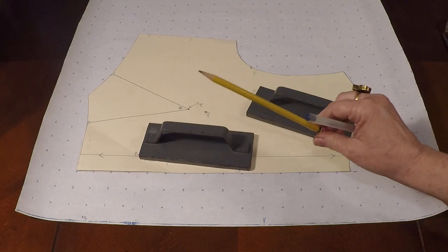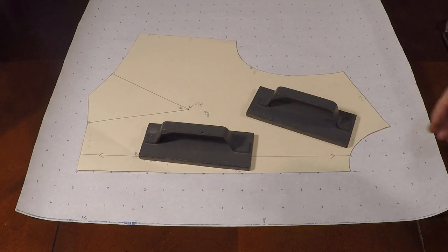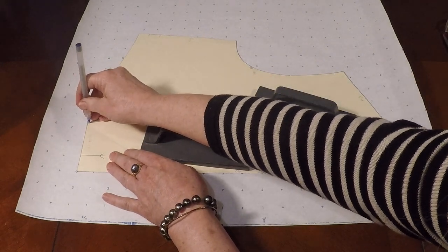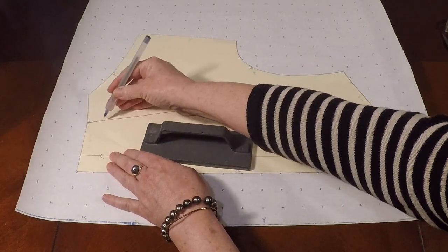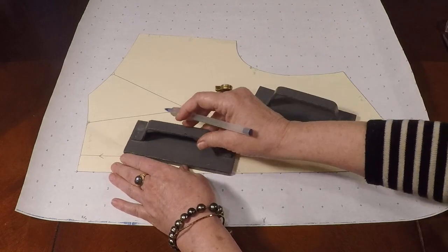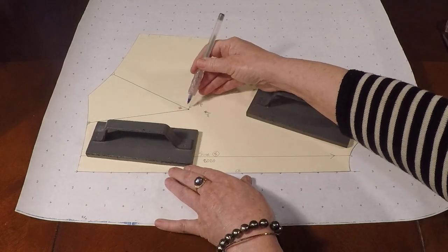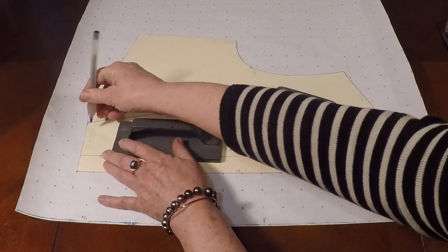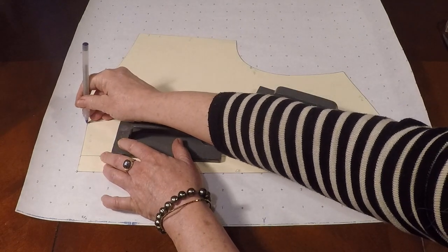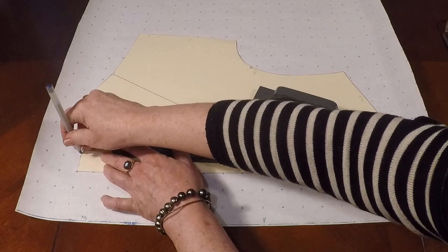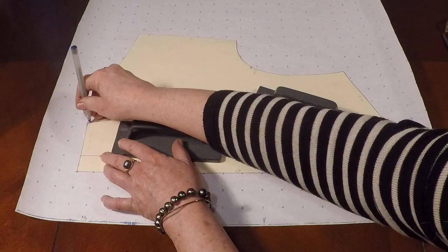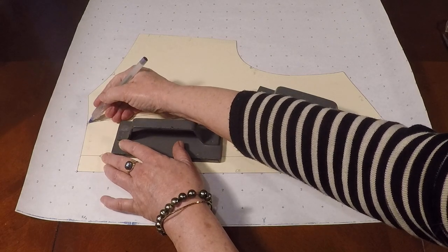And I'm going to weight that down. You can use a pencil for this. I'm going to use a pen so everybody can see. And I'm going to trace off right until the first dart leg. But when we do the pivot method, we're not transferring from this dart tip. We're going to transfer everything from the apex. So I need to mark that first dart leg and I'm going to copy the front waist.